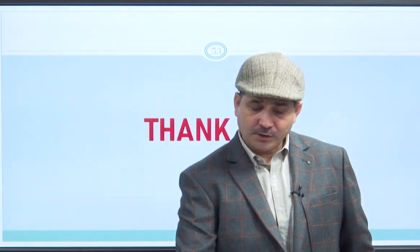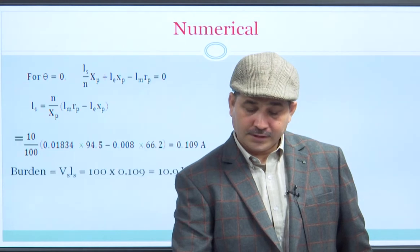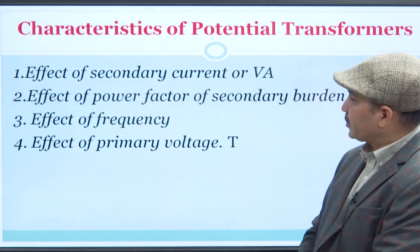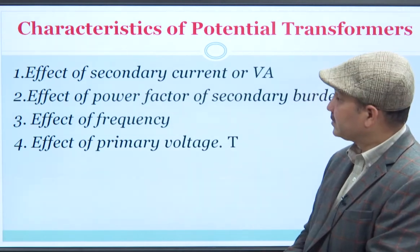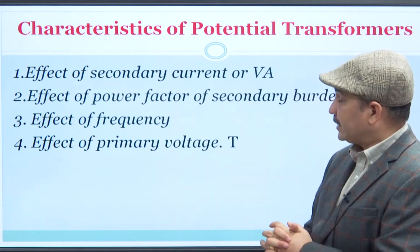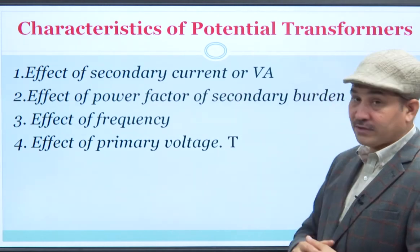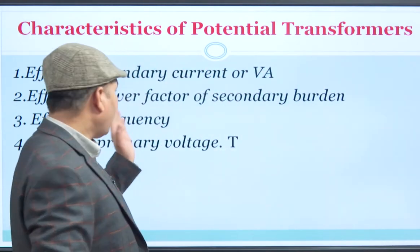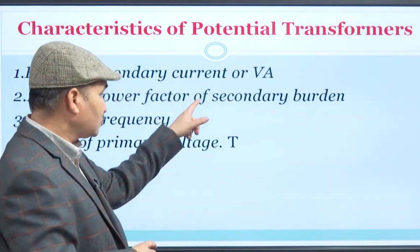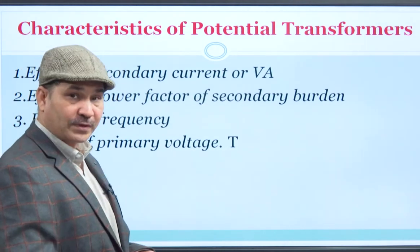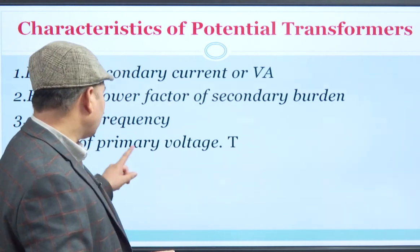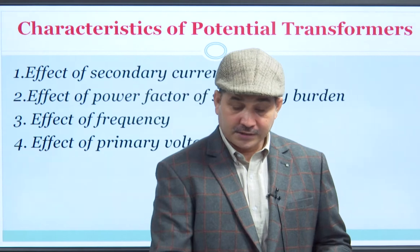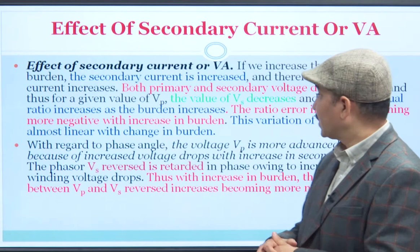Now let us talk about the characteristics of the potential transformer. Previously we discussed the characteristics of the current transformer; now we are discussing the potential transformer. The characteristics concern four parameters: first, the effect of secondary current or volt-ampere on performance; second, the effect of power factor of secondary burden; third, the effect of frequency; and fourth, the effect of primary voltage. These four parameters are of concern and importance when talking about the characteristics of the potential transformer.